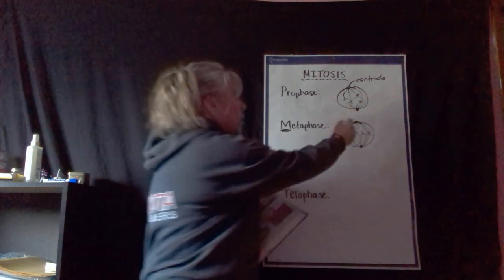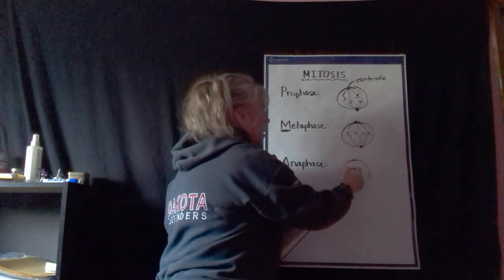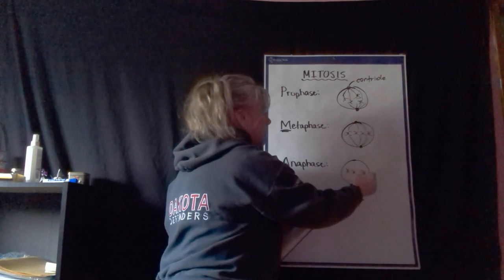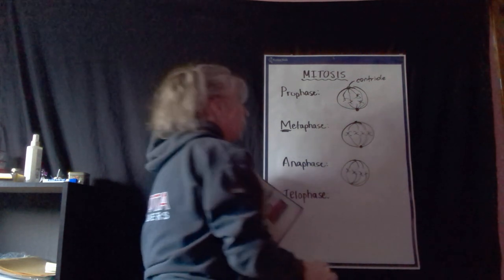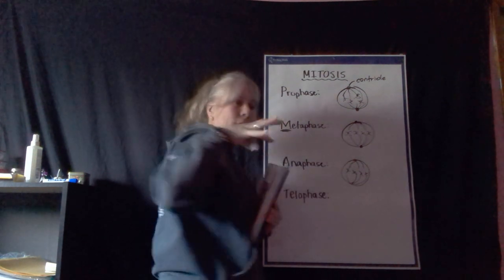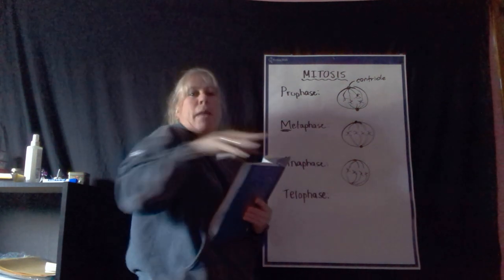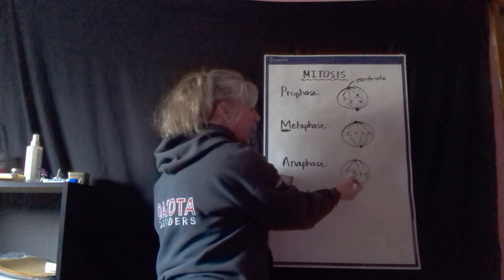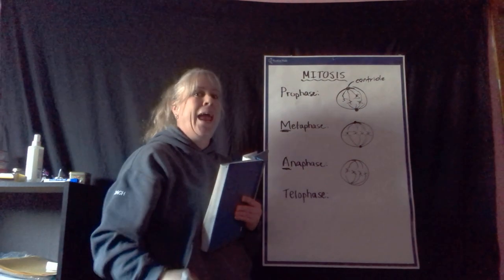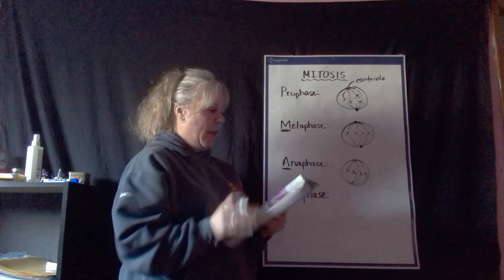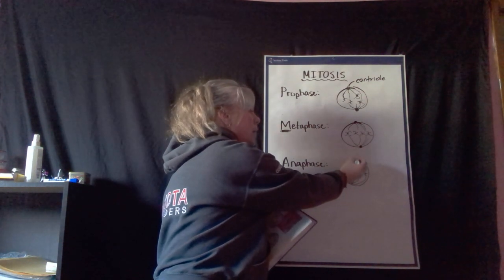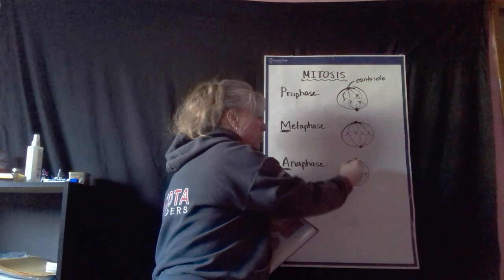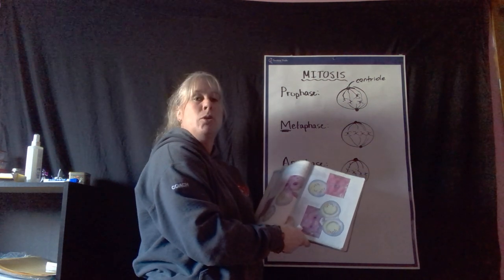The next one is anaphase. Now that these are all lined up in the middle, what happens in anaphase? These finger-like projections — these spindle fibers — start to contract. They pull back toward the centrioles, and they pull and tug these chromosomes apart. A, anaphase — A, apart. It pulls them apart. As seen in your diagram on page 19, we now get one set of chromosomes going toward one centriole and one set moving toward the other centriole.